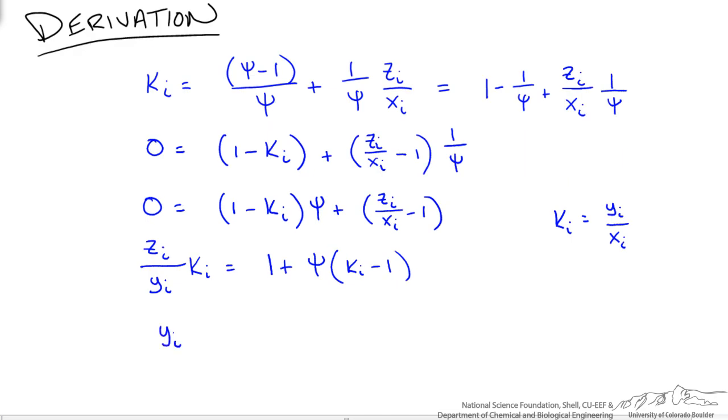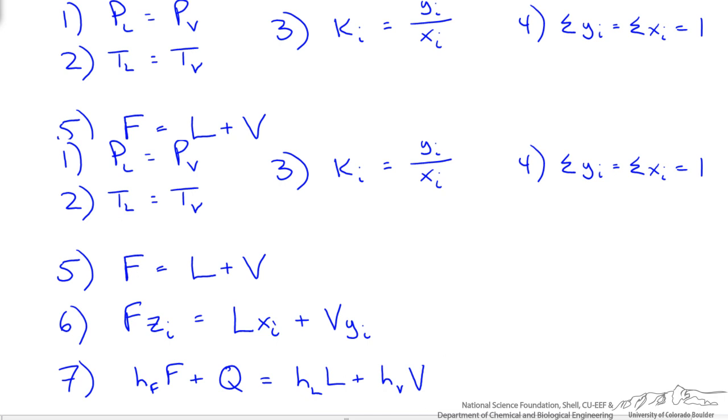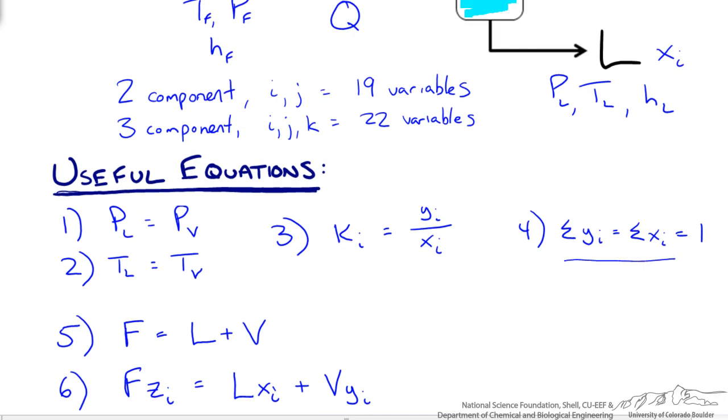So we are almost there. One last thing. We are going to solve for yi. So you can see if we bring yi to the right side and take the right side and bring it to the left. Then we get zi, ki divided by the rest. And our xi is just equal to yi over ki.